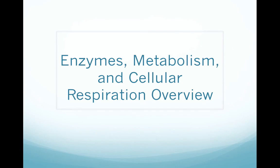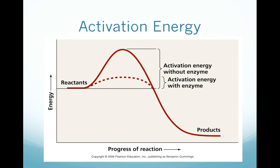Chapter 4 introduces us to enzymes, metabolism, and cellular respiration. Let's start with a discussion on enzymes. The first concept you need to understand is the idea of activation energy. For any chemical reaction to occur in your body, a certain level of energy has to be reached first — this energy is called the activation energy. It serves as a very important barrier for chemical reactions. Without activation energy, every chemical in your body would be reacting all the time with everything, making it very difficult to regulate your metabolism.